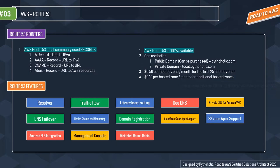The best thing about AWS Route 53 is it's 100% available — you will never face an issue with Route 53, which is very assuring. You can use both public domains that you purchase or private domains like local.pytholic.com. Cost-wise, it will cost around $0.50 per hosted zone per month for the first 25 hosted zones, and $0.10 per hosted zone per month for additional hosted zones.